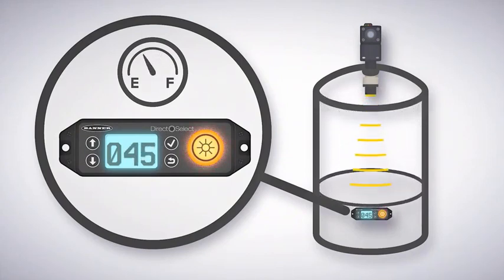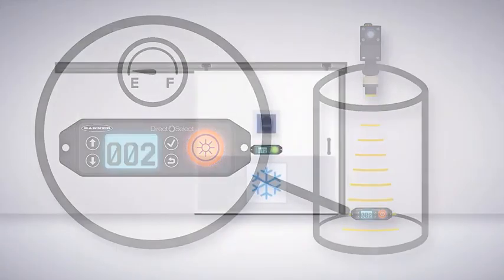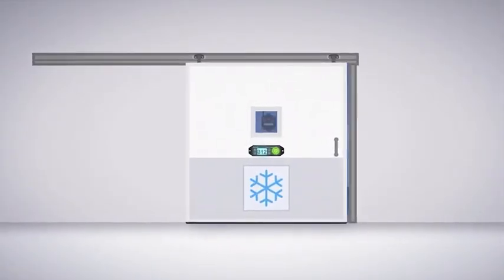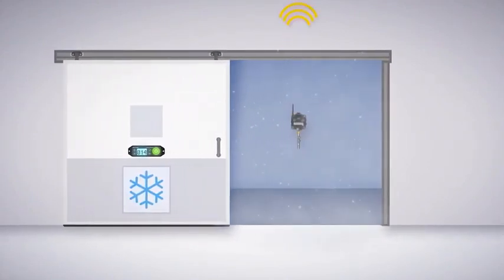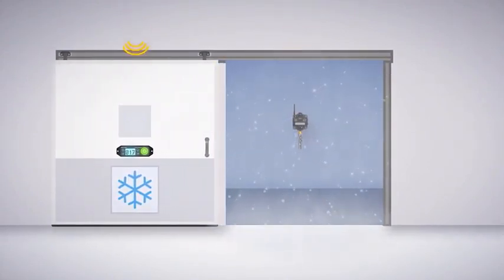And here a Direct Select is used to indicate the temperature inside a walk-in freezer. By using wireless devices instead of a wired thermometer, the temperature data can be sent and used elsewhere while the Direct Select indicates the data locally.